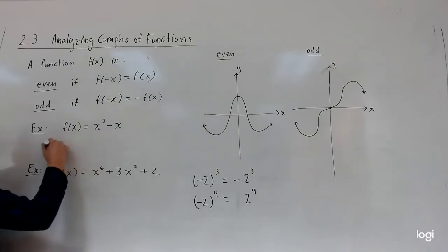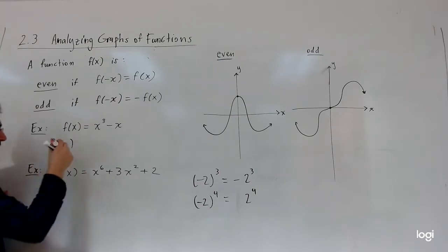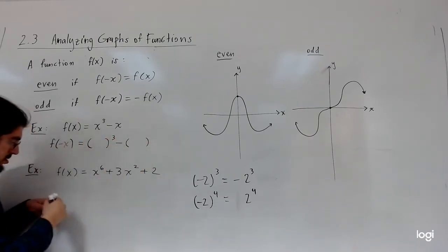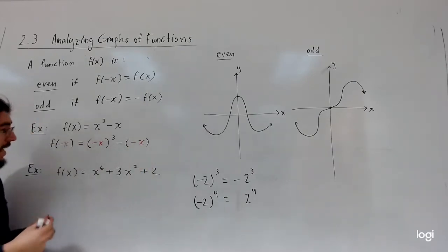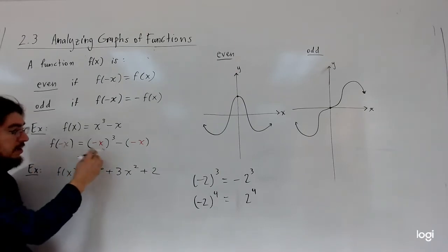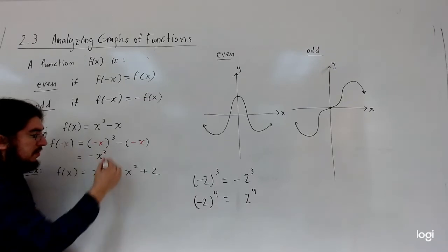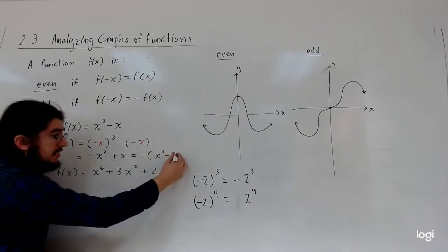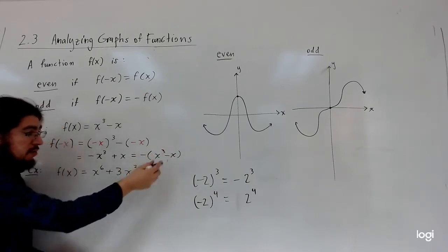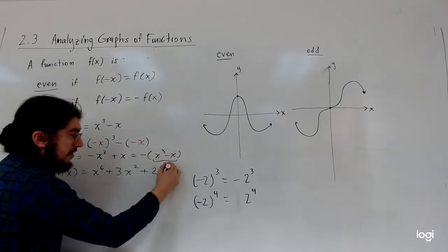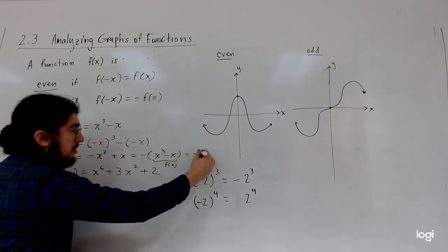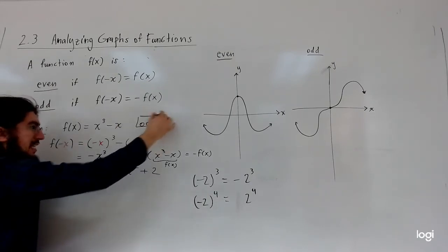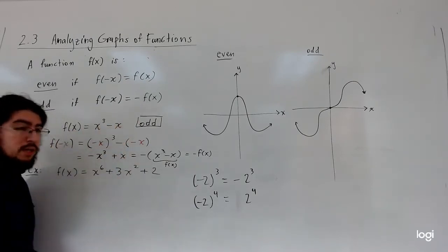For the first example, we want to see if f of x equals x cubed plus x is even or odd. We replace x with negative x everywhere. With an odd power, the negative comes out: we get negative x cubed. And we get a double negative, which is positive x. So we can factor out a negative to get negative times (x cubed minus x), giving us negative f of x. So this is actually an odd function, and it makes sense because its terms have only odd powers.